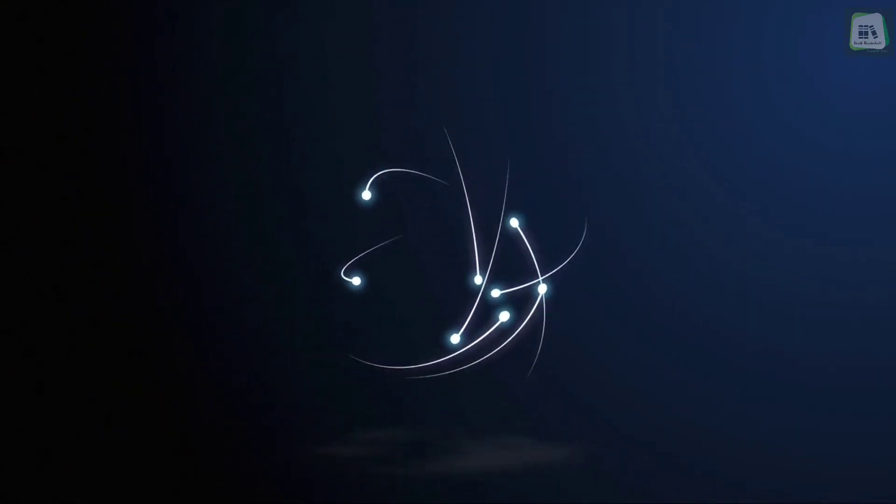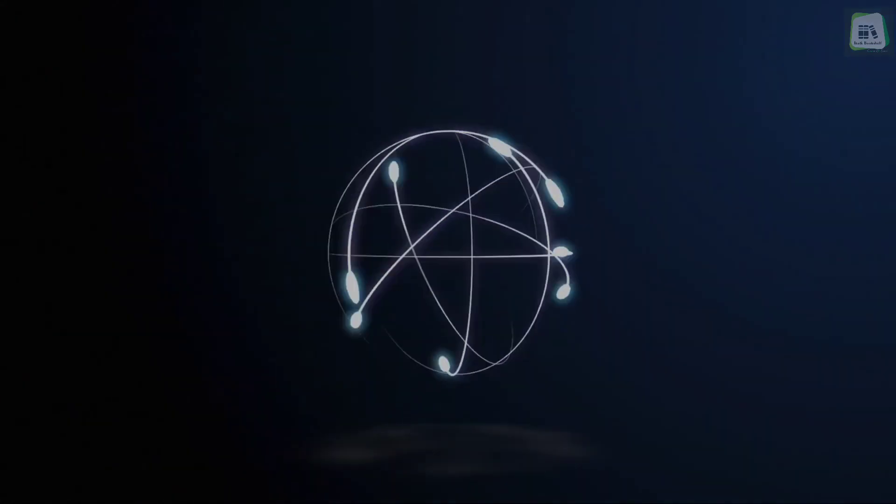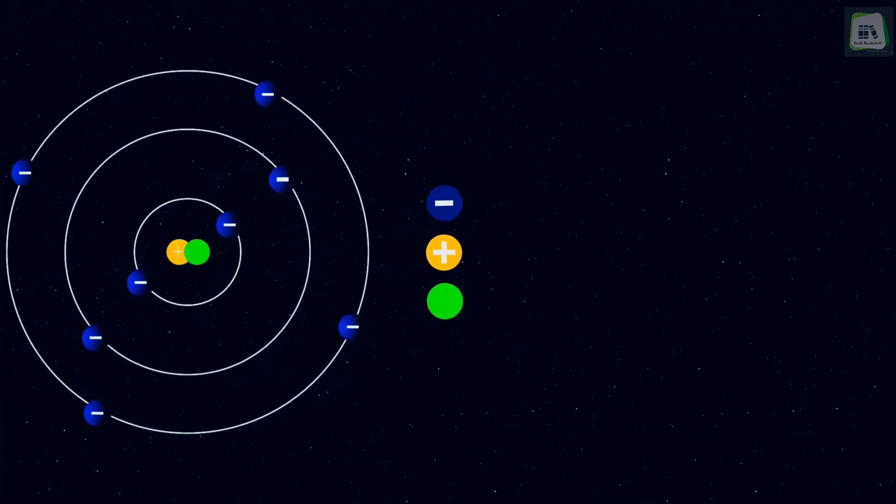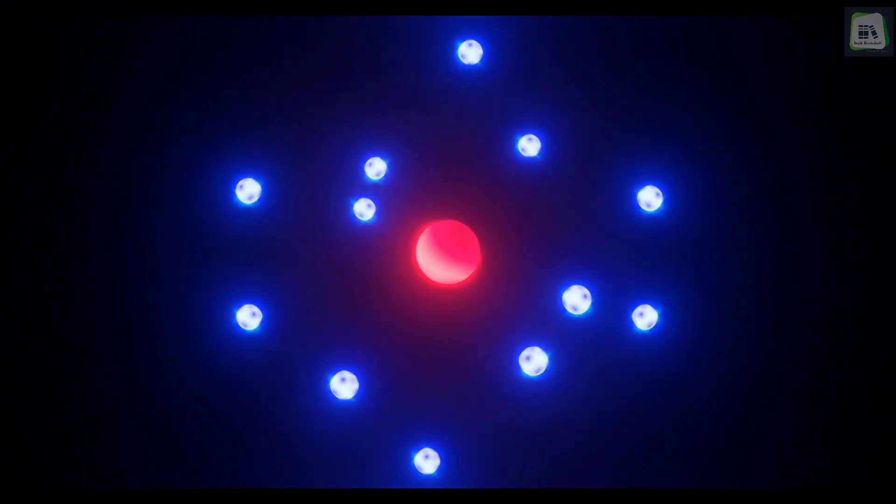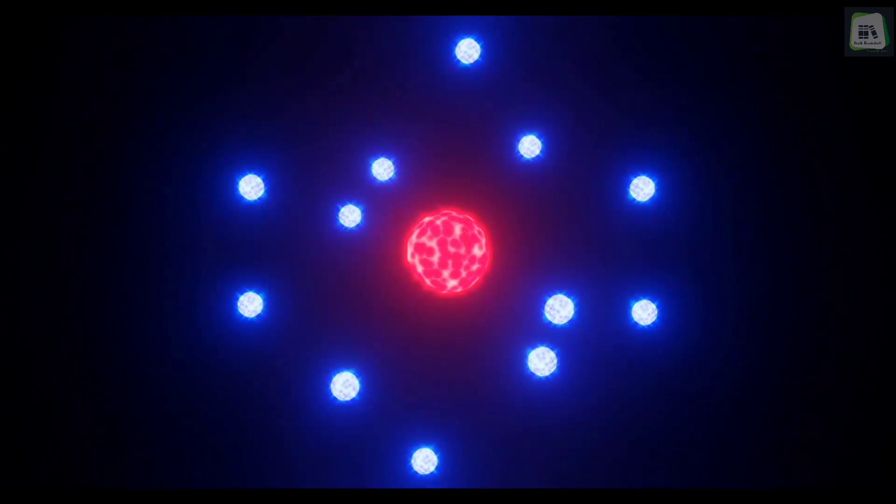Yet today we have found more than 20 different particles in the core of the atom. Scientists believe the atom is made up of electrons, protons, neutrons, positrons, neutrinos, mesons, and hyperons.